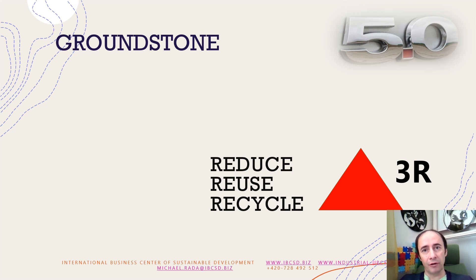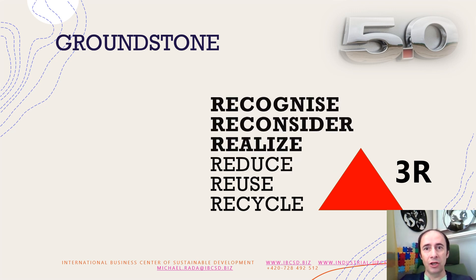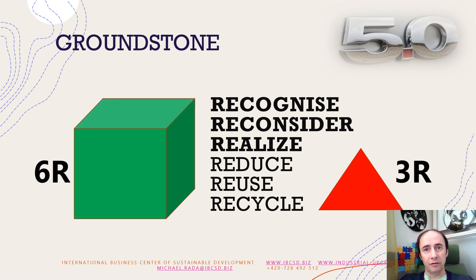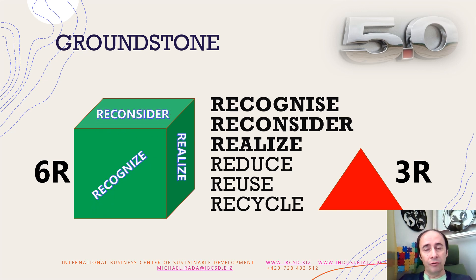Many tried before. This is why Industry 5.0 has another ground stone, and it is a cubic — a real ground stone on which you can build a future. Firstly, you have to recognize that something must not become waste. If you do so, you have to reconsider what to do with it. And finally, you realize it — and then you have no waste.